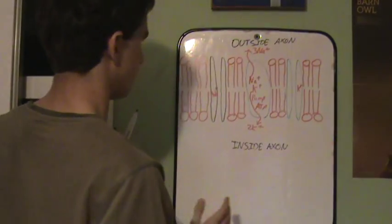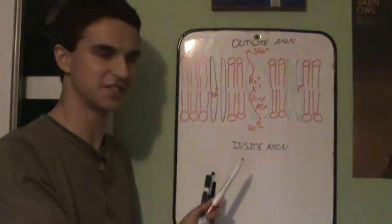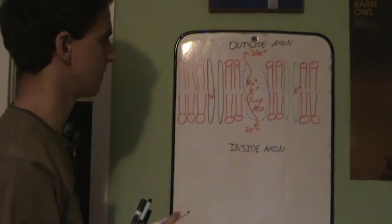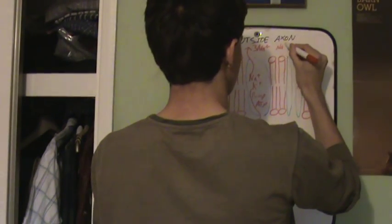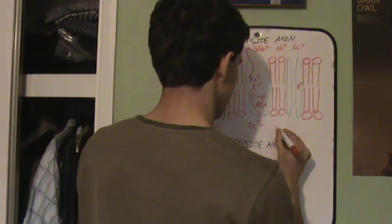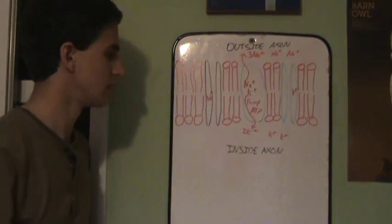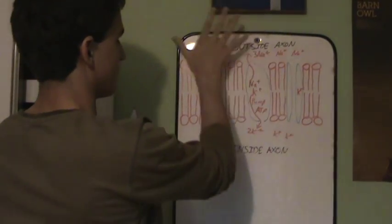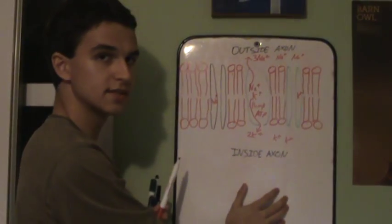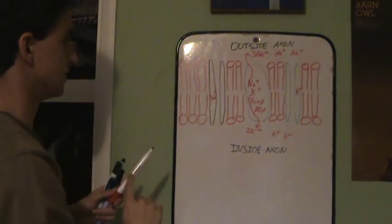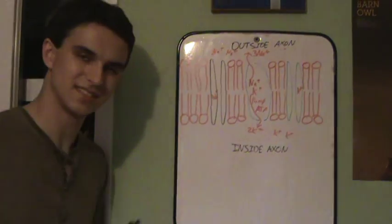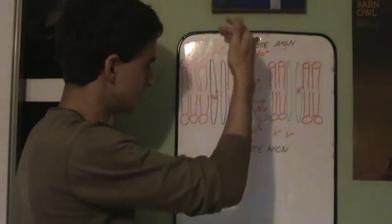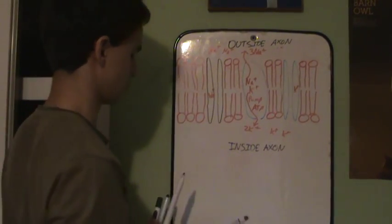So we've got sodium ions actively transported out and potassium ions being actively transported in. Now that creates a gradient. So now we've got loads of sodium ions here and loads of potassium ions here. So there's a concentration gradient. There's a higher concentration of potassium ions here than on the outside, and there's a higher concentration of sodium ions here than on the inside. So that means, let's draw them over there for reasons you'll see.